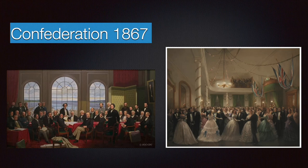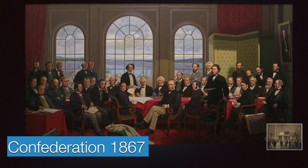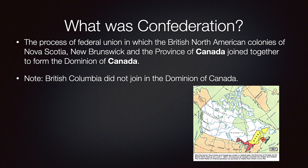Welcome to today's intro video on Confederation, which happened in 1867. Confederation was the joining of colonies in British North America. Looking at this painting, what do you notice? Who do you notice is missing? We're going to discuss this further in class, but it should be pretty clear who is not being represented. From the last chapter, we know that the main British colonies were the Atlantic colonies, Canada East, Canada West, and British Columbia.